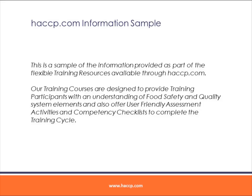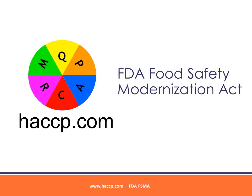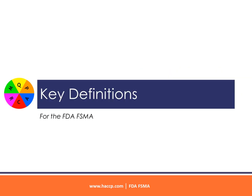This is a sample of the information provided as part of the flexible training resources available through HACCP.com. Our training courses are designed to provide training participants with an understanding of food safety and quality system elements, and also offer user-friendly assessment activities and competency checklists to complete the training cycle.